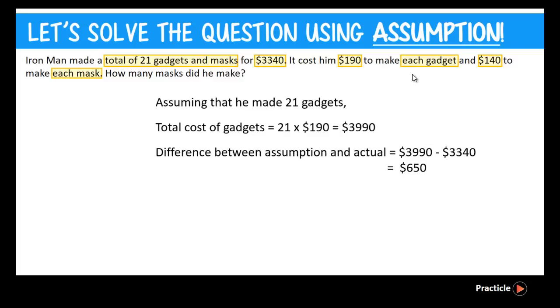When we go back to the question, we realize that each gadget costs $190, and then each mask costs $140. So we find the difference between one gadget and one mask. We realize that when we take $190 minus $140, we will have $50. So each gadget actually costs $50 more than the mask. So this $50 is exactly the amount that is responsible for the differences in our assumption and the actual value spent.